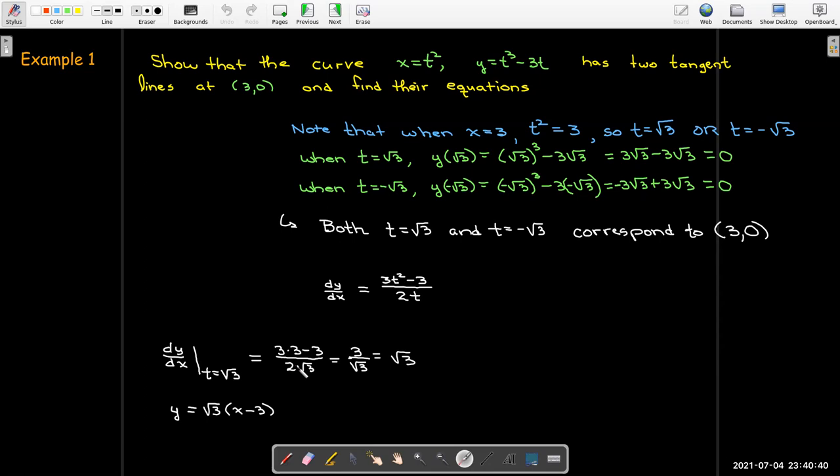Now what will change if t equals negative radical 3? Well, in dy dx, the denominator will change sign. And so now I'll get a negative radical 3. So an equation for the other tangent line would be y equals negative radical 3 parentheses x minus 3.